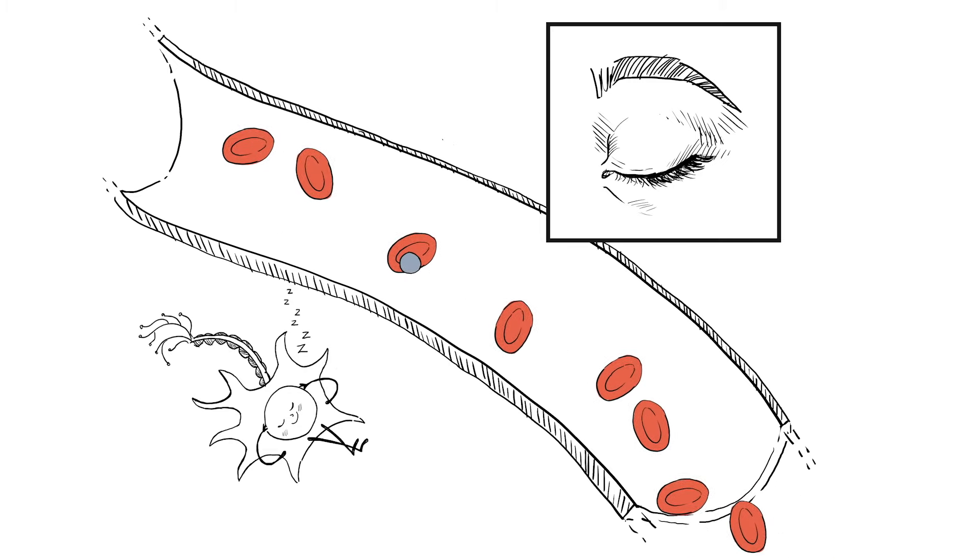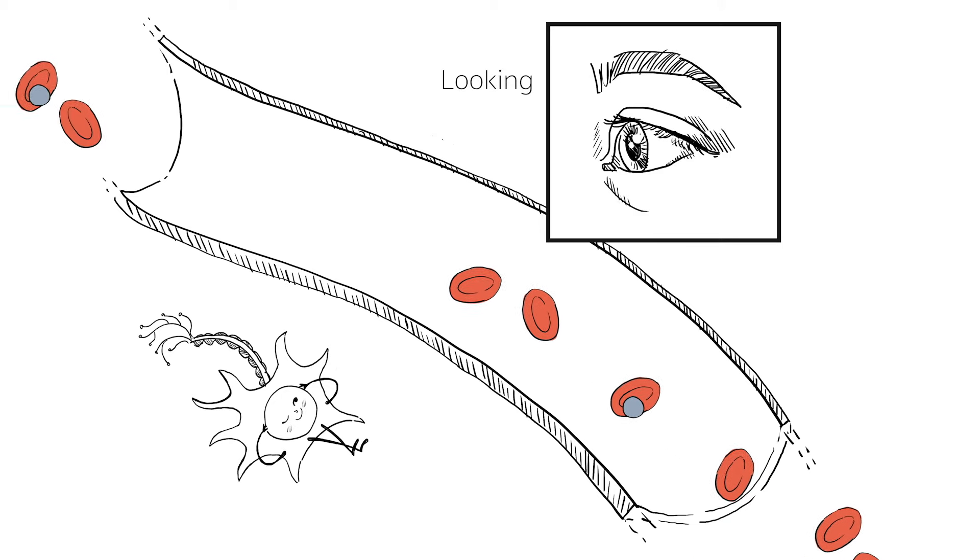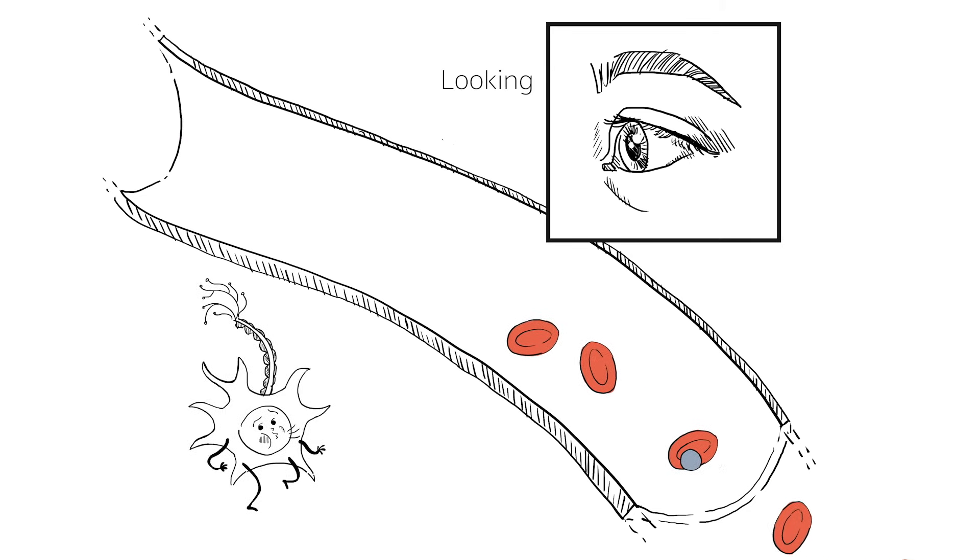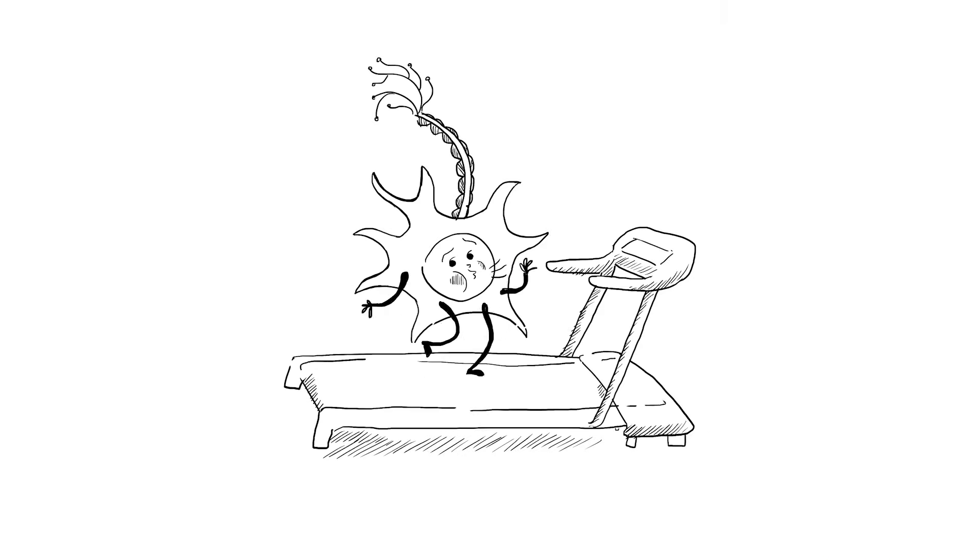When the eye starts looking at something, the brain cell needs to process the information coming from the eye. This means the brain cell needs to work very hard and so it needs a lot of oxygen, just as you need more oxygen when you're running.